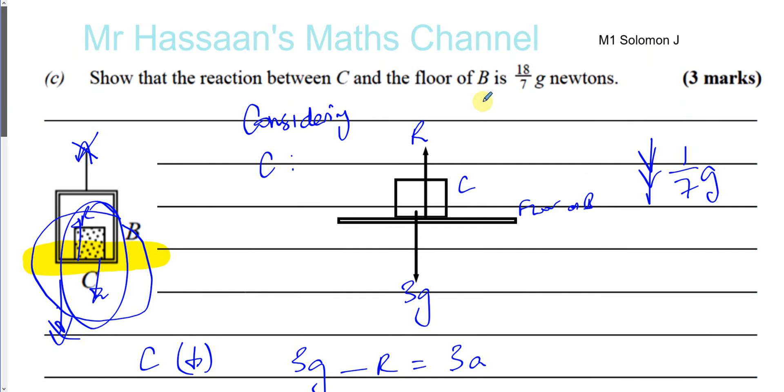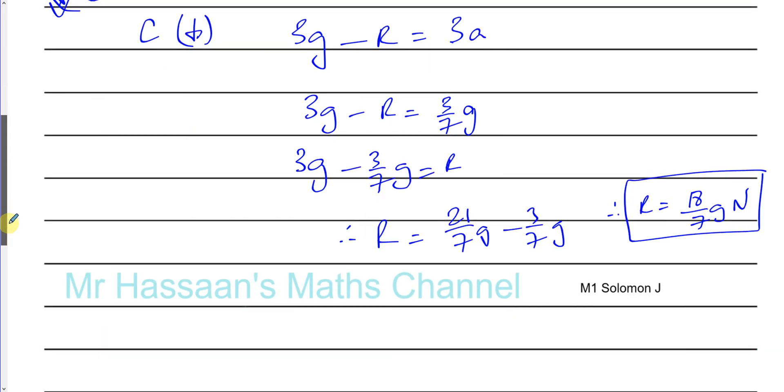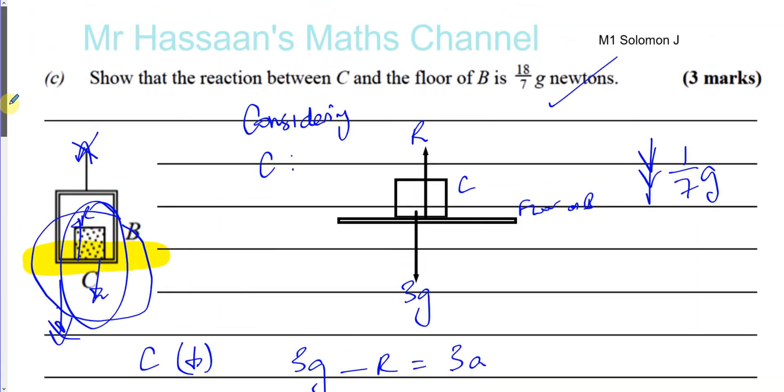And is that correct? Yes, it's correct. 18 over 7G, 18 over 7G Newtons. So there we have the answer to part C.